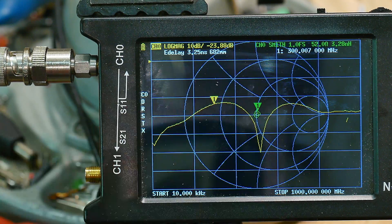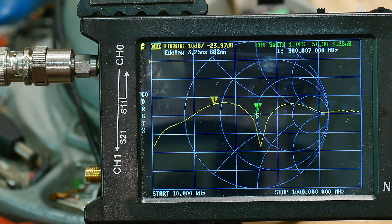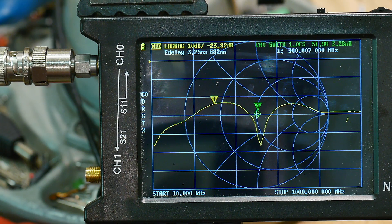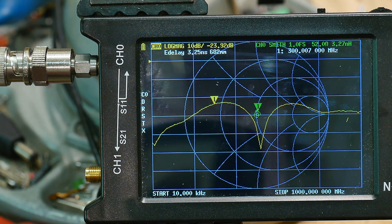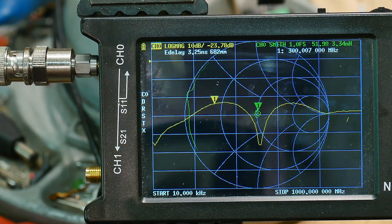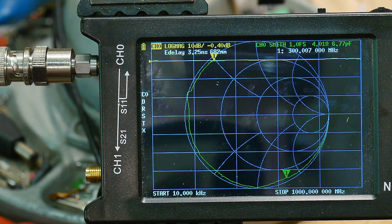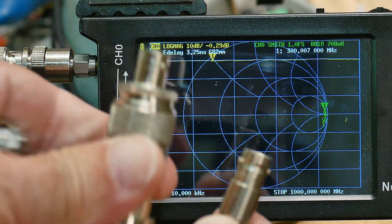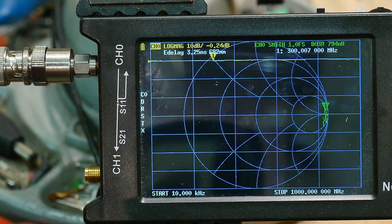The Smith chart is perfect right at the center and our return loss again is below minus 20. So basically the stack up of N connectors and the little BNC thing, those are equivalent.